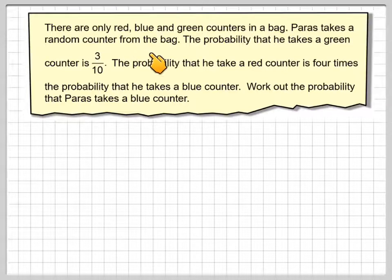There are only red, blue and green counters in a bag. Paris takes a random counter from the bag. The probability it takes a green counter is 3 tenths. The probability that it takes a red counter is 4 times the probability that it takes a blue counter. Work out the probability that Paris takes a blue counter.